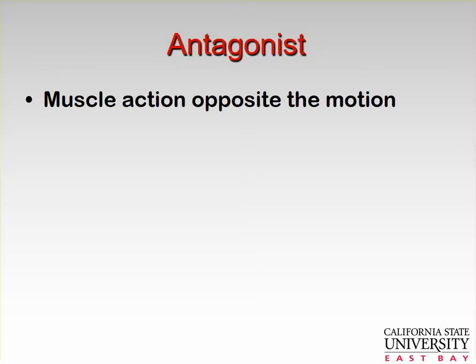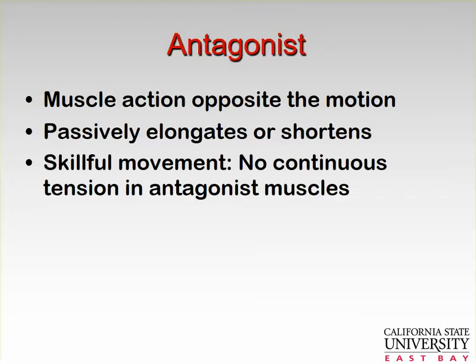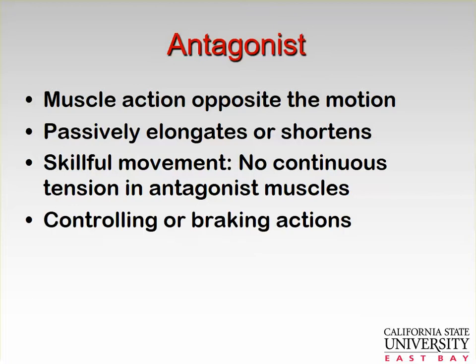Antagonists are the muscles with action opposite to the motion. For most motions, you want them to be very quiet — you don't want any antagonist torque acting on you. Typically these muscles passively elongate or shorten. For skillful movement, there's no tension in the antagonist muscles. They can be used as controlling or braking forces after a maximal motion. For any new activity, there's often a lot of co-contraction, and the contraction of the antagonist muscle decreases as your movement becomes more fluid.